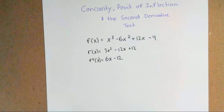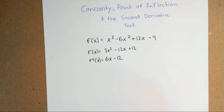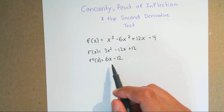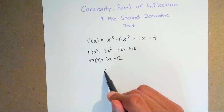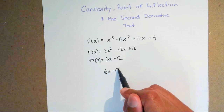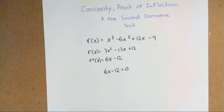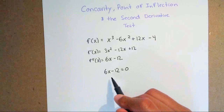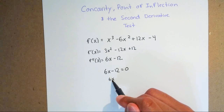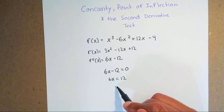Concavity follows the same exact steps that you did for increasing and decreasing. You first find your derivative, then find your second derivative. Now set this equal to 0, because what you want to do is find out when your second derivative equals 0 — you're finding your critical numbers. So solve for x: you get 6x equals 12, and then x equals 2.